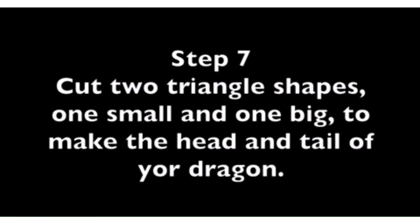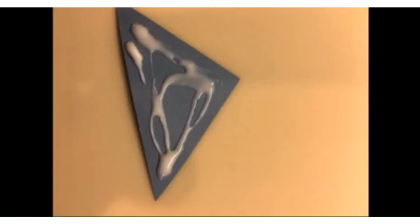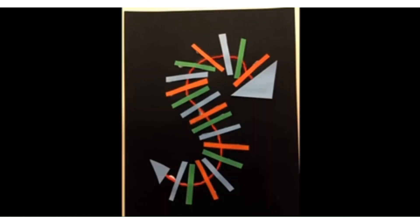Step 7. Cut two triangle shapes, one small and one big, to form the head and tail of your dragon. Add a small amount of glue to each one and stick them in place.